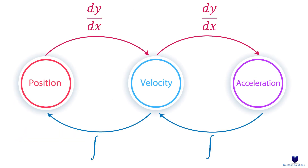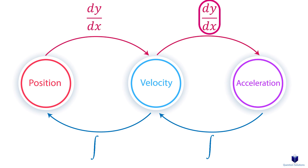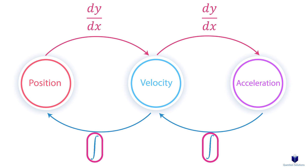Here is a small recap of how to go from one to the other. If you want to get velocity from acceleration, you need to integrate. If you need to get acceleration from velocity, take the derivative. If you need to get position from acceleration, integrate two times: the first integration gives you velocity, and the second gives you position.